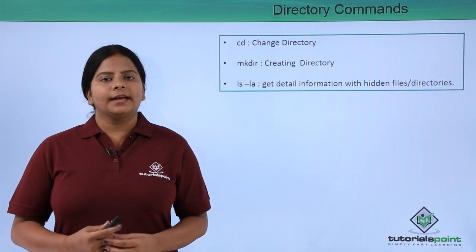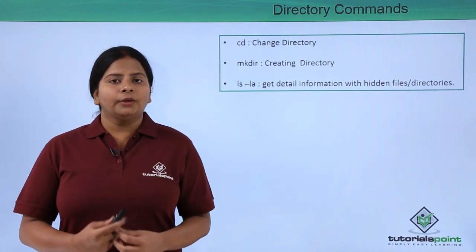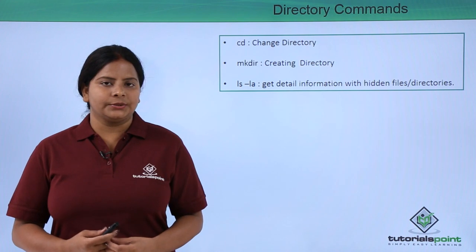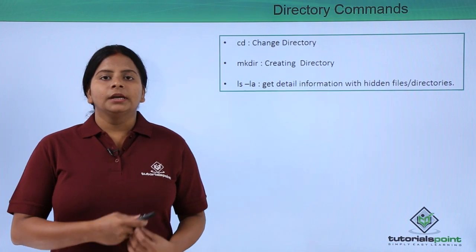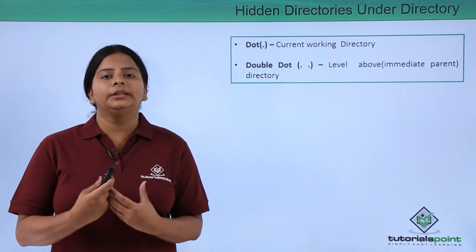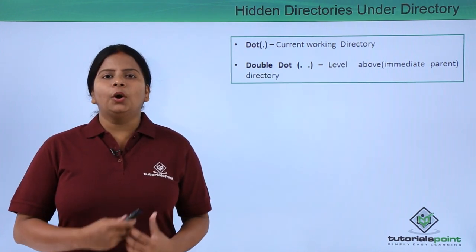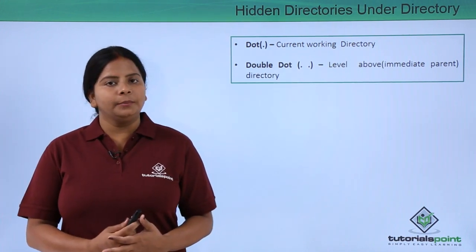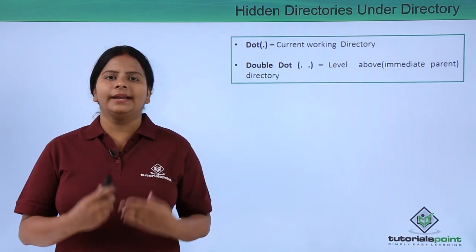Basically ls -la will show you all the hidden directories and files located in the present directory. If I want to check how many files I have created and what hidden files or directories exist in the current directory, I can use ls -la. It also shows all details including the time of creation, permissions, owner name, and group name for each file or directory.